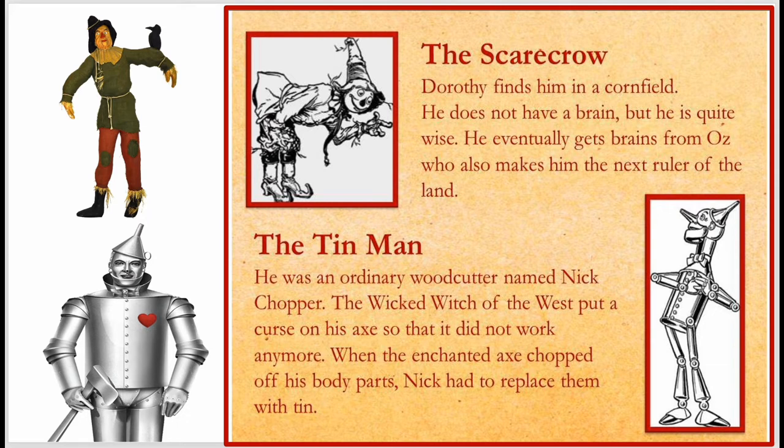The next character is the Tin Man, also referred to as the Tin Wood Man. He was an ordinary woodcutter named Nick Chopper. The Wicked Witch of the West put a curse on his axe so that it did not work anymore. When the enchanted axe chopped off his body parts, Nick had to replace them with tin. In this story, the Tin Wood Man wants to meet the Great Wizard of Oz to get a heart, because being made of tin, he wants to be able to feel something.